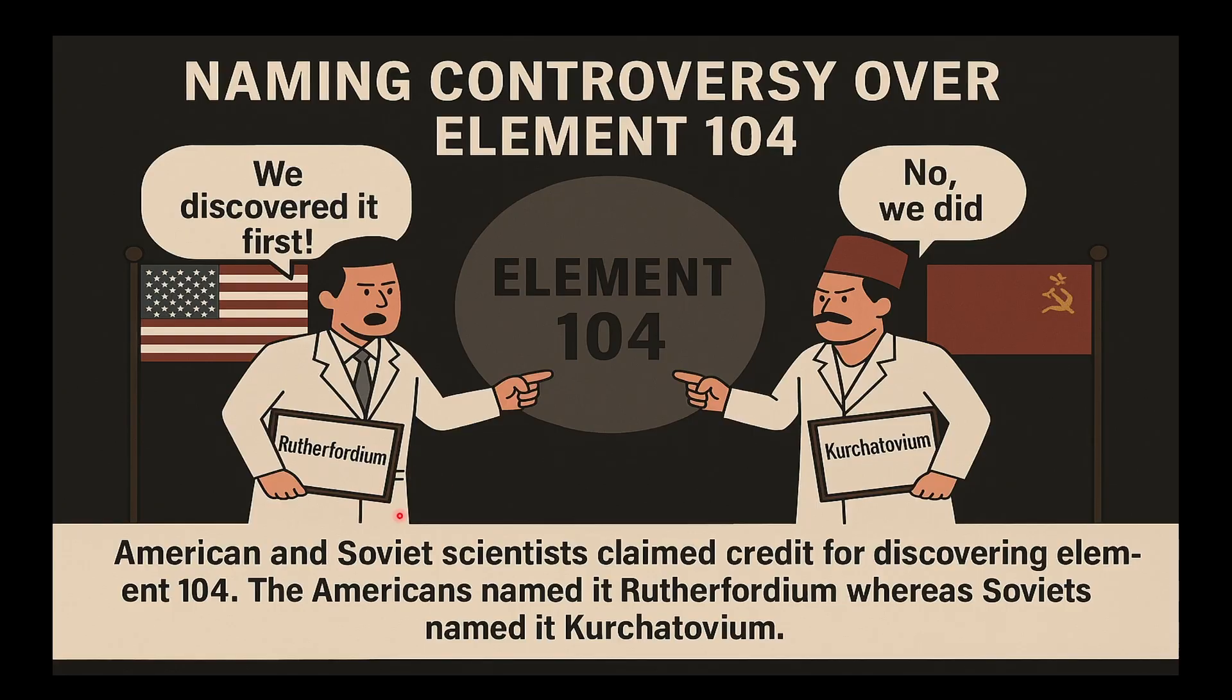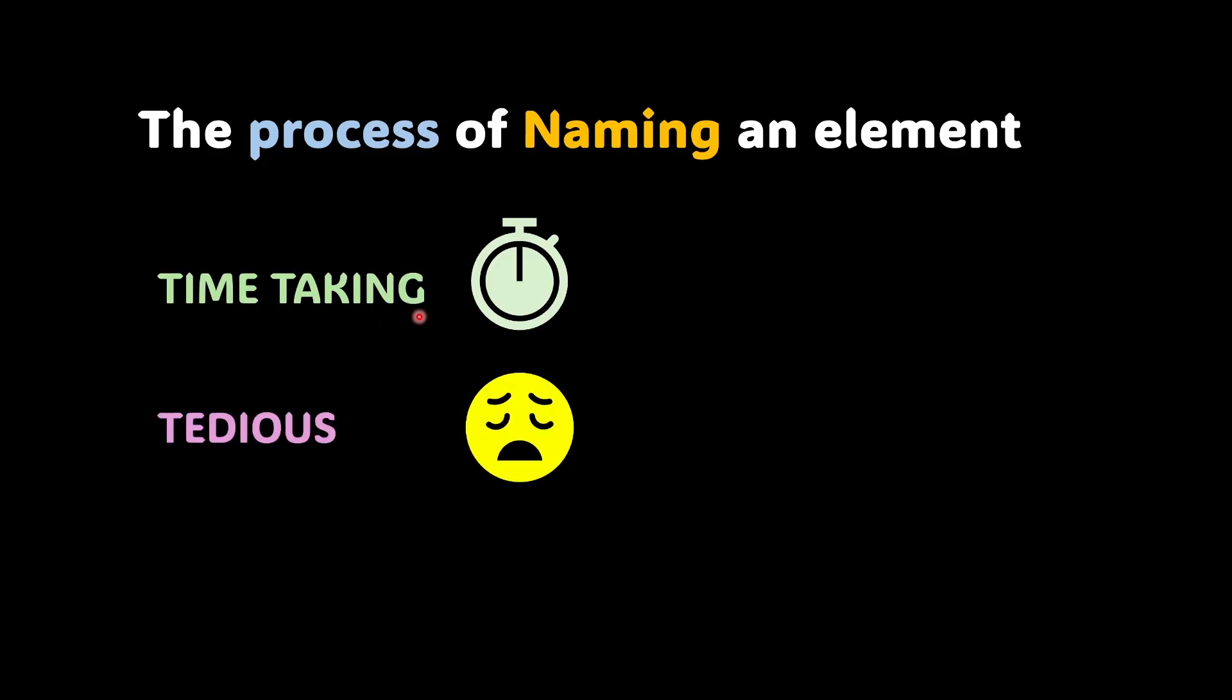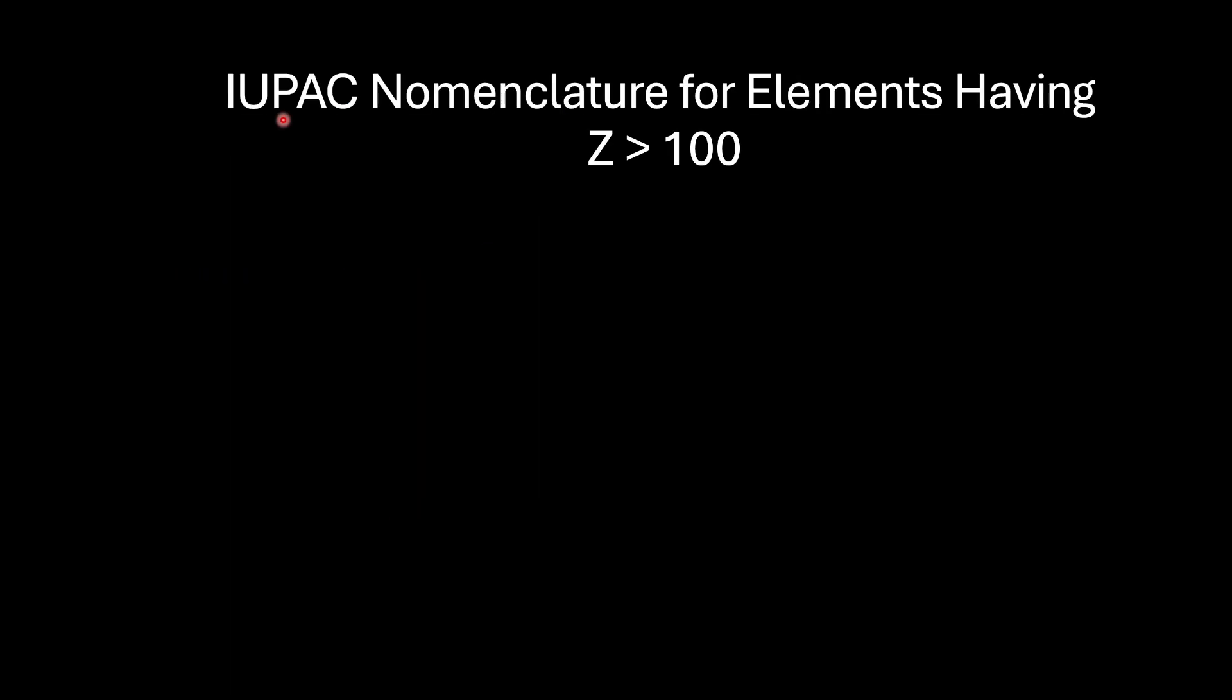Nonetheless, since this whole process of naming can be very time-taking, can be very tedious and authentication can take time, there are proper rules to name the new elements and once these new elements are authenticated, then only IUPAC ratifies it. So there is a proper way how we actually do the nomenclature of these elements having atomic number greater than 100.